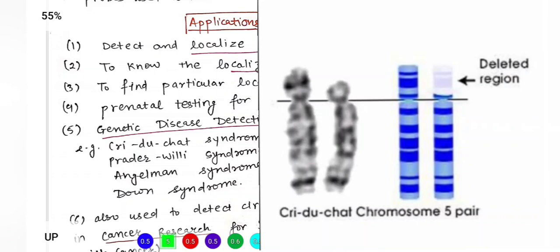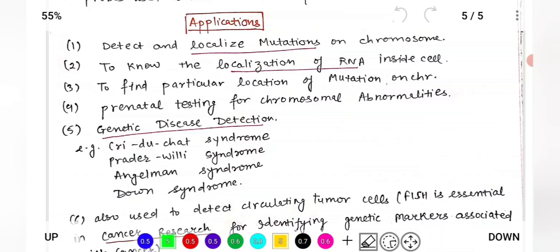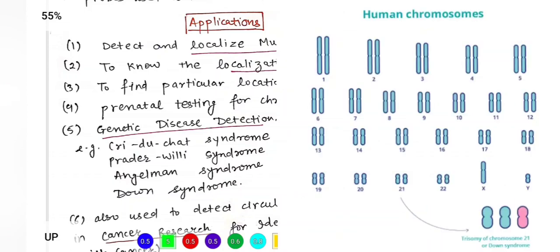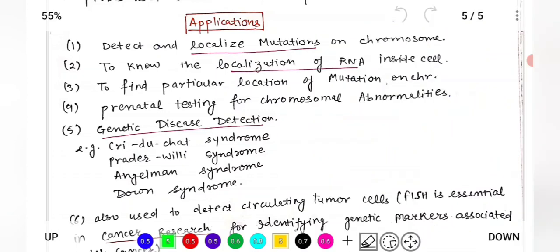In Cri-du-chat syndrome, there is a deletion in the short arm of chromosome 5. Using FISH, fluorescence will be produced to detect this. If a part is deleted, fluorescence will not be produced at that location when a complementary probe is added. In Down syndrome, there is an extra copy of chromosome 21, which can also be detected using fluorescence.